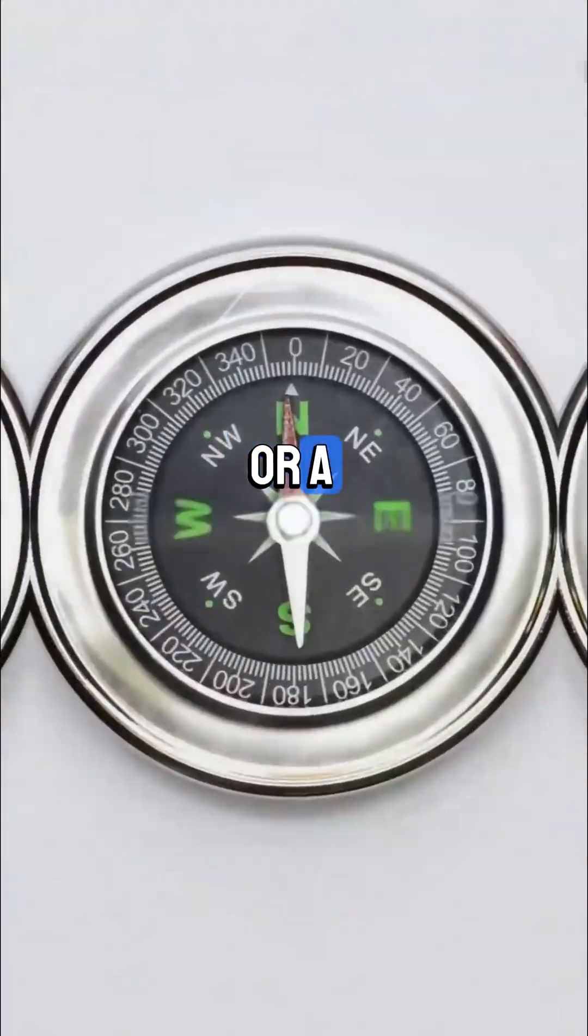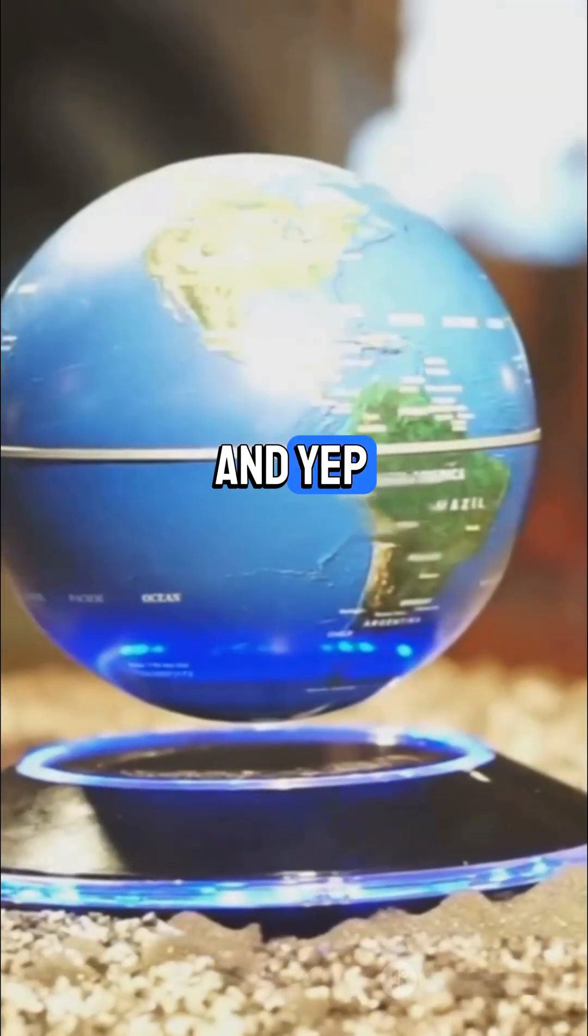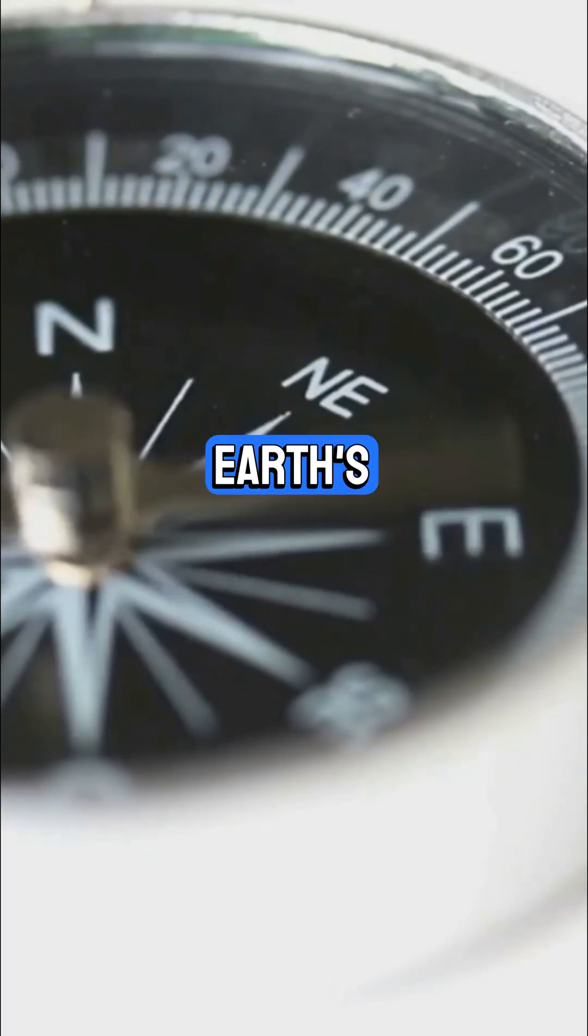Map these fields with iron filings or a compass needle. And yep, the earth itself is one giant bar magnet. Your compass? It lines up with the earth's field.